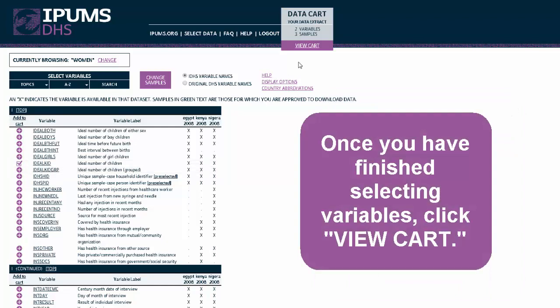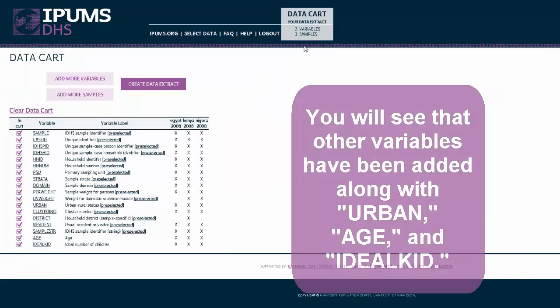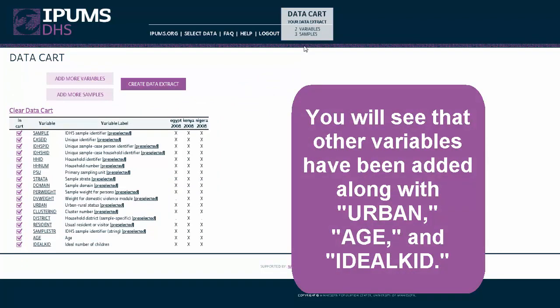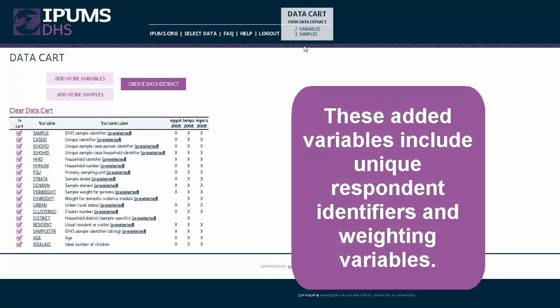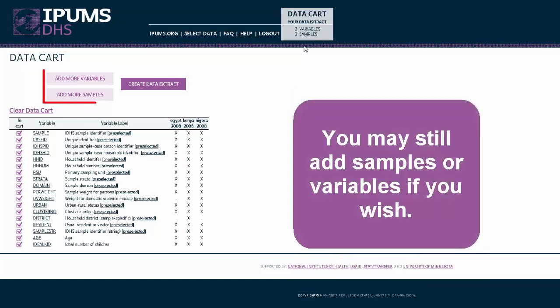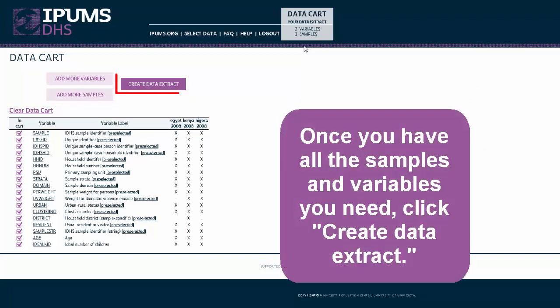Once you've finished selecting variables, click View Cart. You will see that other variables have been added along with Urban, Age, and Ideal Kid. These added variables include unique respondent identifiers and weighting variables. You may still add samples or variables if you wish.